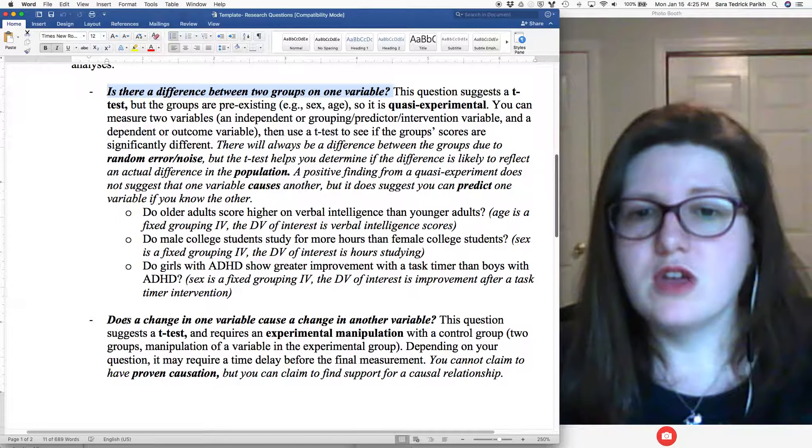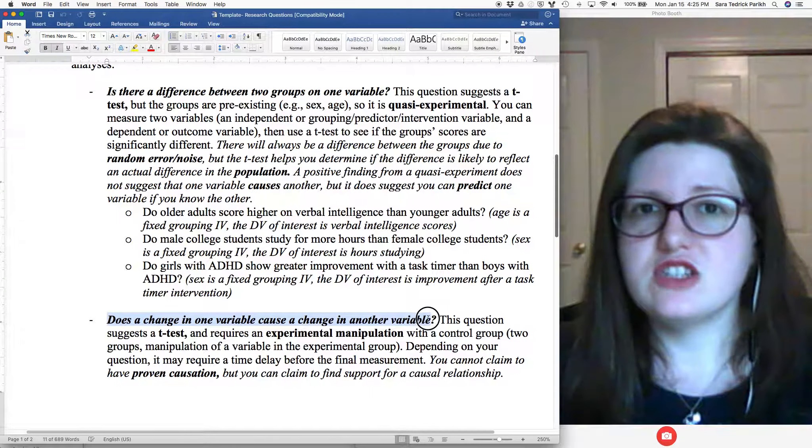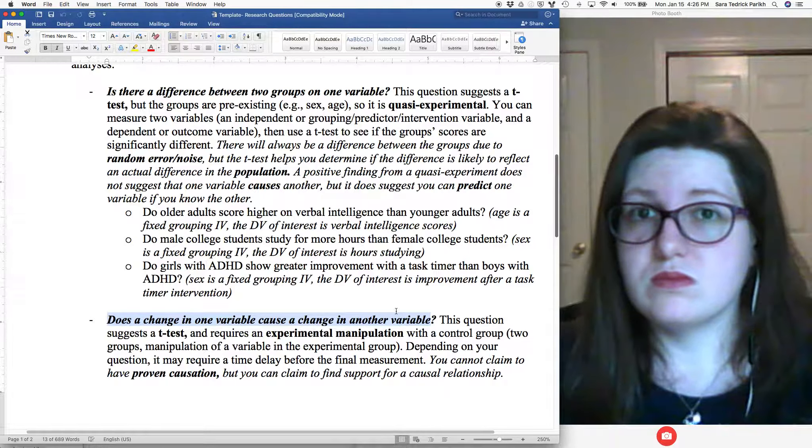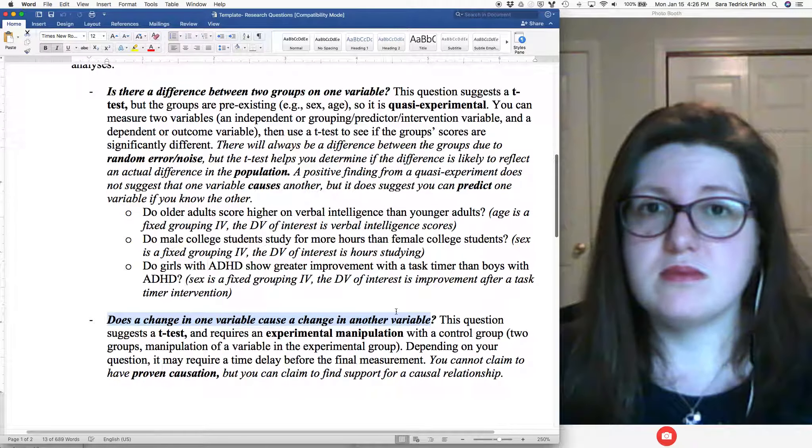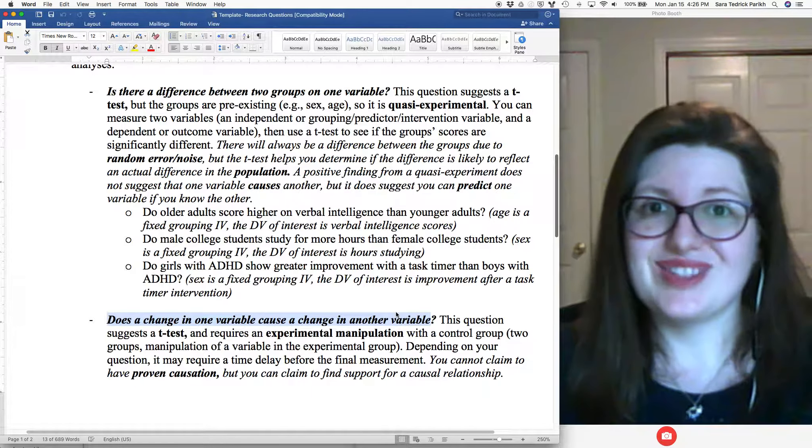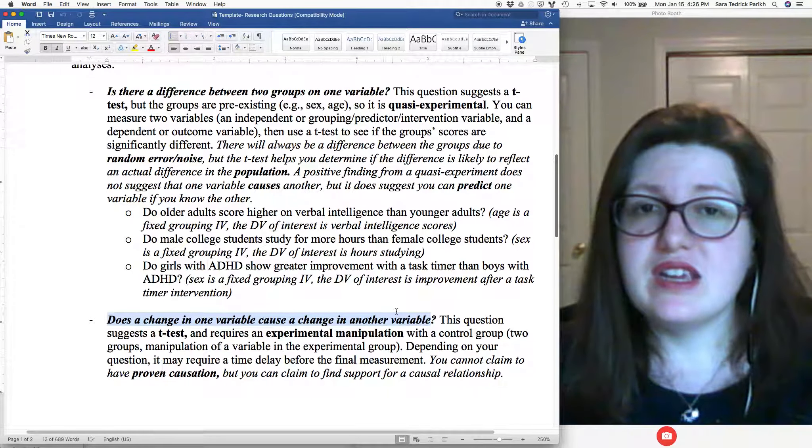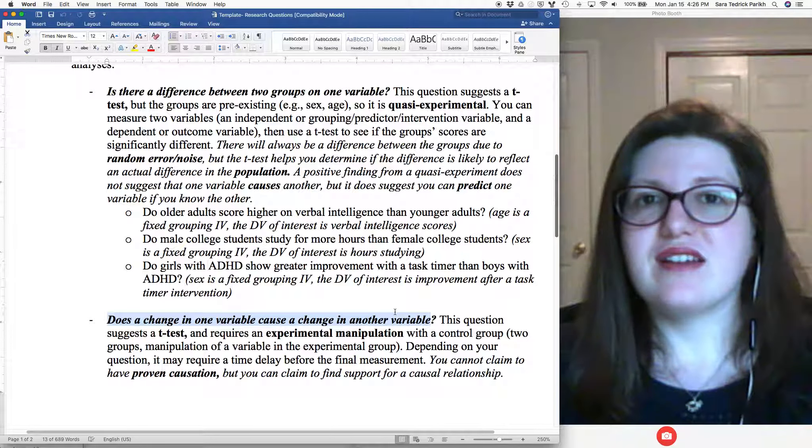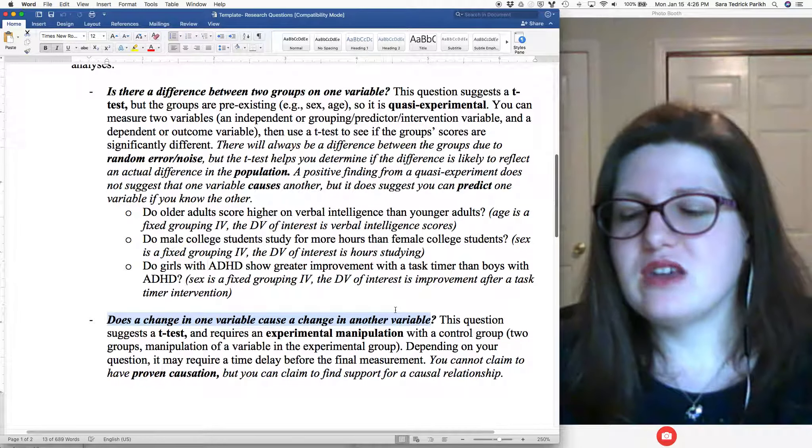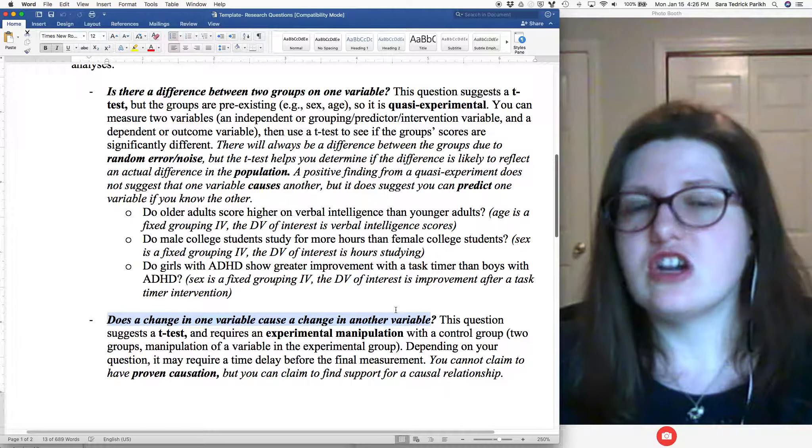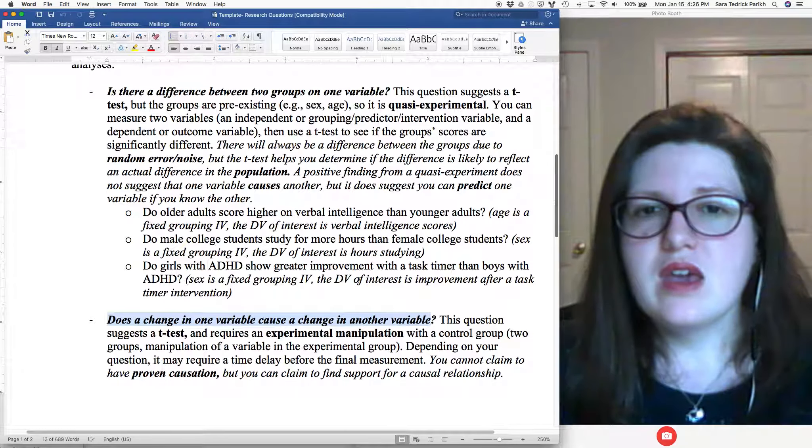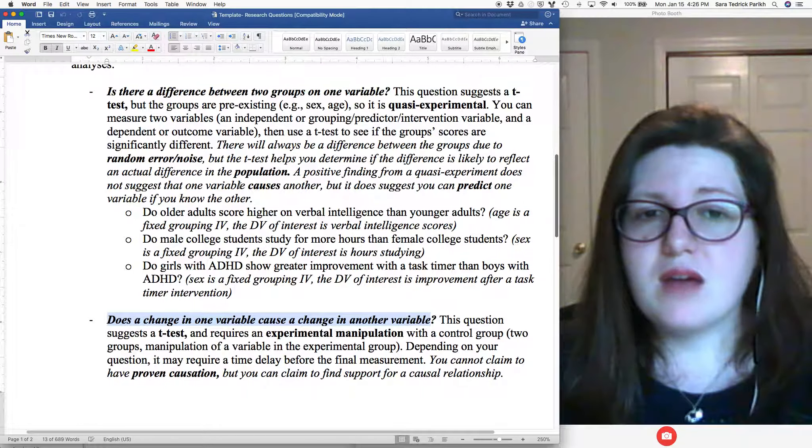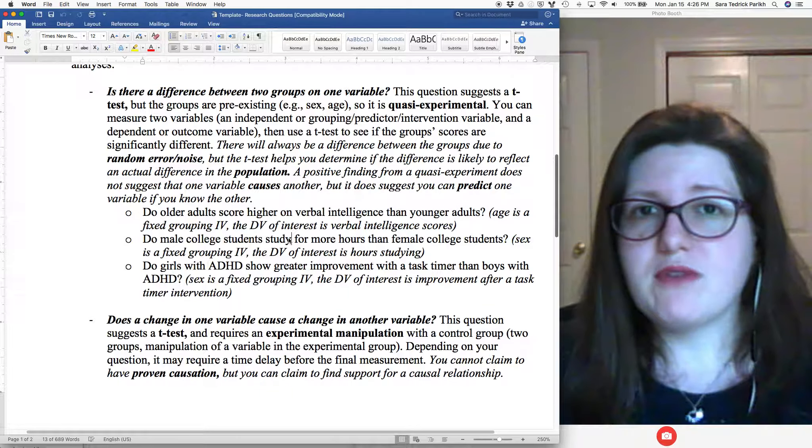And then you are going to choose one of two types of questions. So the first one is this quasi-experimental one I've been talking about. So are these two groups different on one variable, or you can say, does a change in one variable cause a change in another variable? Either way, you're going to be using a t-test to test it. So everybody's going to be writing about the same test. I know most of you haven't had stats yet. That's okay. I give you the language you need. And hopefully some of this will come back to you when you take stats.